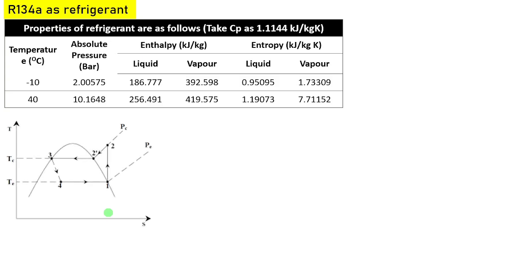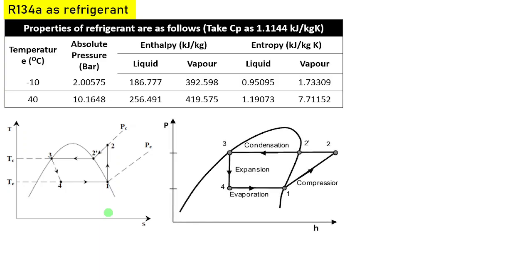If I draw the TS diagram for this cycle, this will be the simple vapor compression cycle, and this is the PH diagram. Our aim is to find out the COP. In order to find out the COP, we should find out the enthalpy at point numbers 1, 4, 2, and 1.